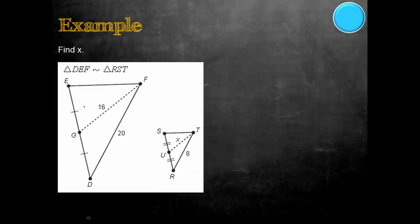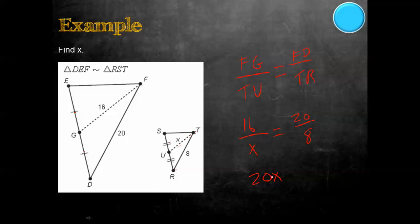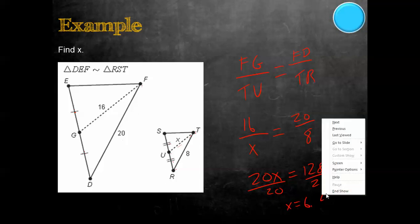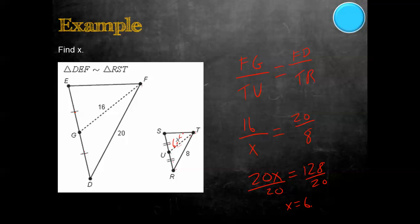In this example, we have a median FG — you can tell because it divides the two sides in half, shown by the matching hash marks. We set up FG over TU equals FD over TR. Substituting values: 16 over X equals 20 over 8. Cross-multiplying gives 20X equals 128. Dividing by 20 gives X equals 6.4. So the median for this triangle is 6.4.